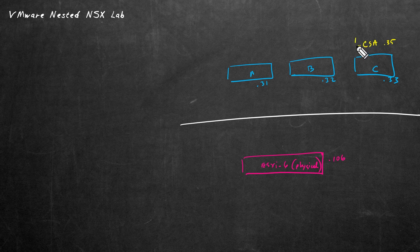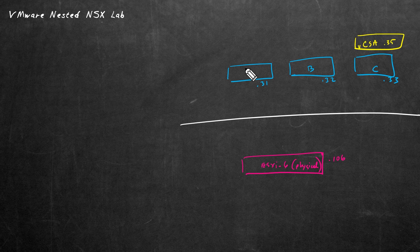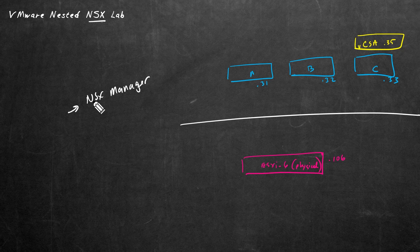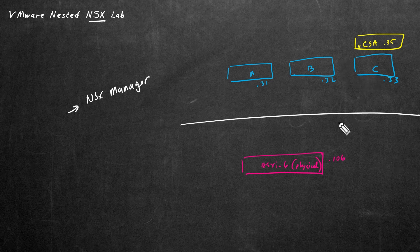Currently in our topology, we have our vCenter server appliance VM that was running on ESXIC, and we migrated it over to ESXIA. These are our three virtualized nested ESXI hosts. The brains behind NSX is the NSX Manager, which has a couple of primary responsibilities: we log into it to configure our NSX environment regarding security and virtualized routing and switching. Besides working as a management plane, it also handles the control plane, coordinating efforts between the ESXI hosts and other VMs involved in NSX.